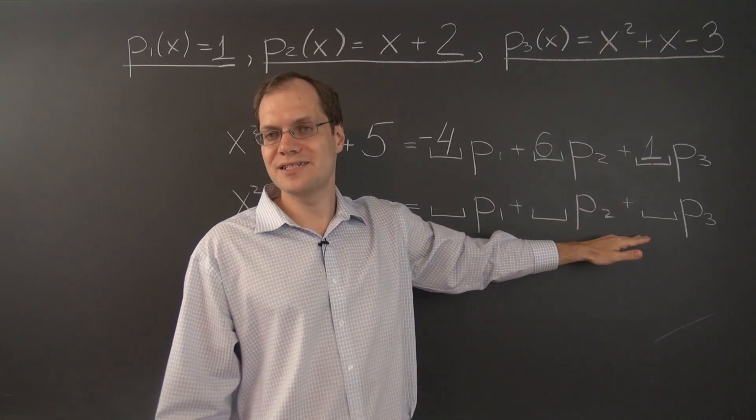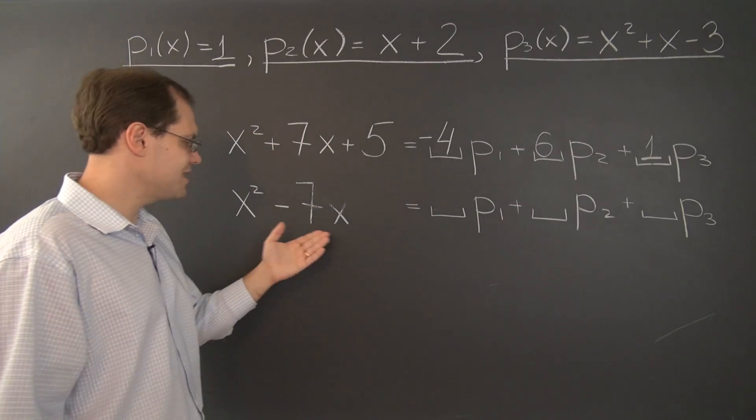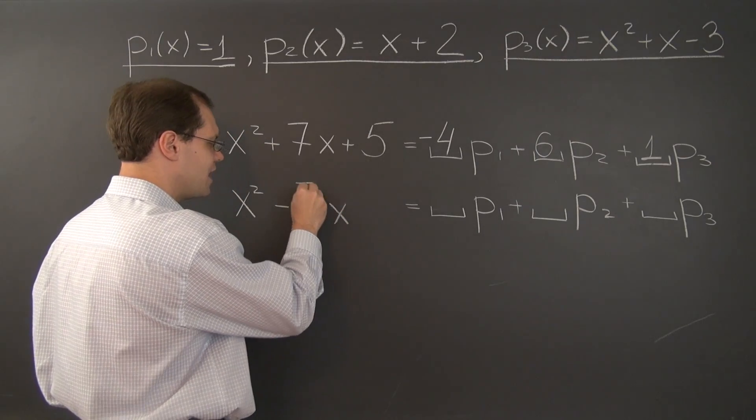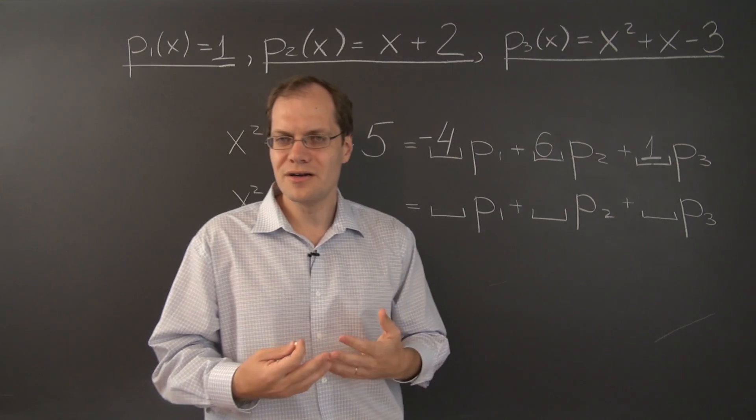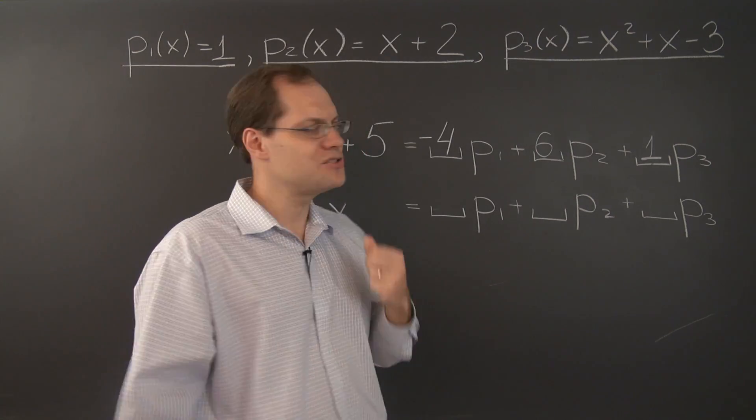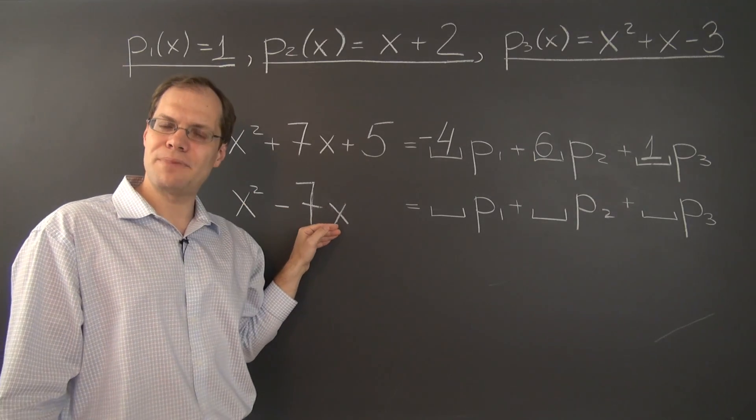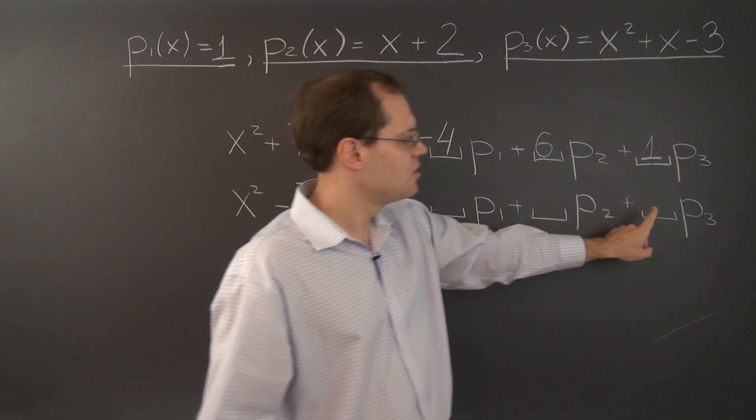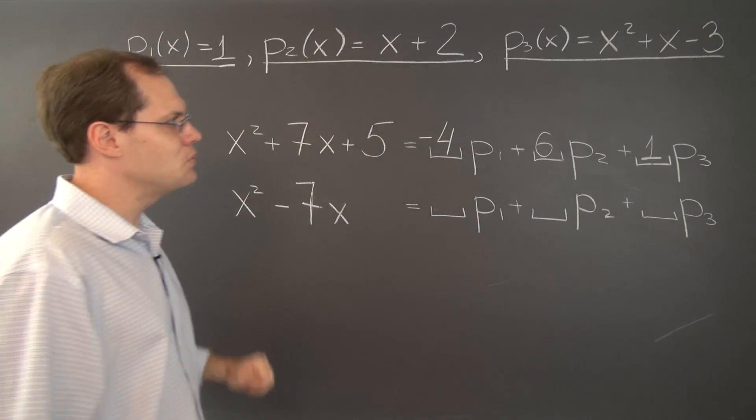So let's do another example with this bootstrapping set of polynomials. And once again, even though this polynomial is different, we would go after the coefficients in the exact same order because the order in which you go after the coefficients is really dictated more by the set itself rather than by the polynomial you're trying to decompose. So once again, going after this coefficient first, that coefficient needs to be 1.